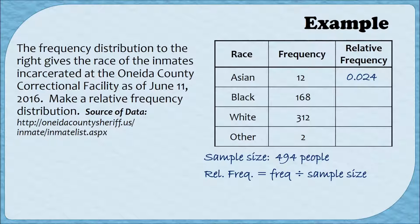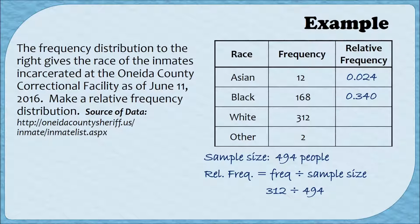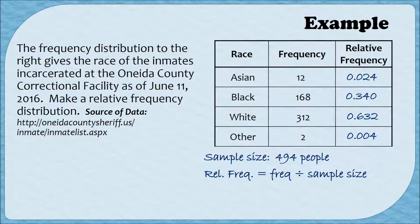To find the relative frequency for Black, we divide 168 by 494 and get 0.340. I'll keep that trailing zero as a reminder that I'm writing answers to the nearest thousandth. For White, 312 divided by 494 gives 0.632. And lastly, for Other, 2 divided by 494 gives about 0.004. And that's how you create a relative frequency distribution.